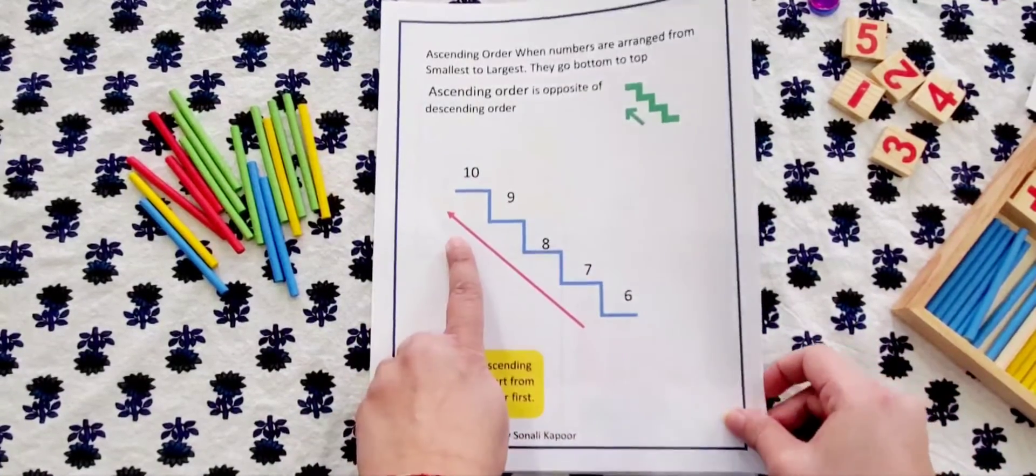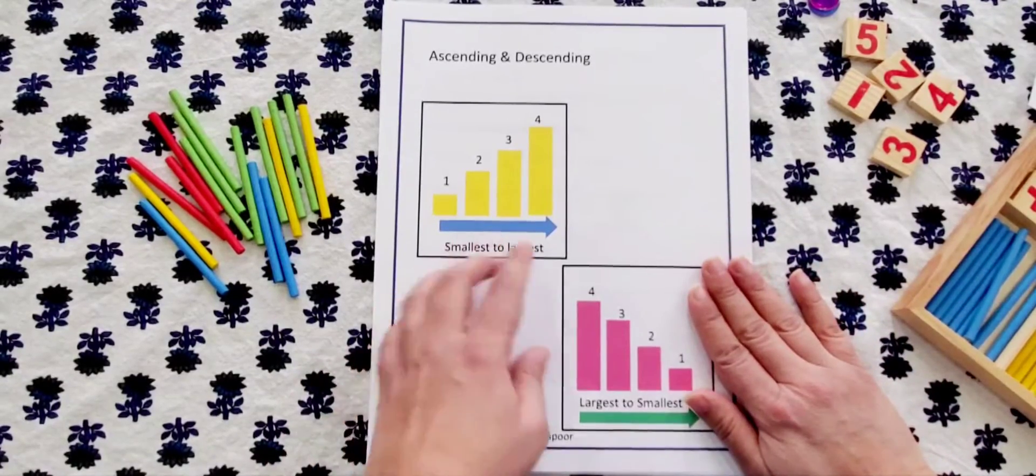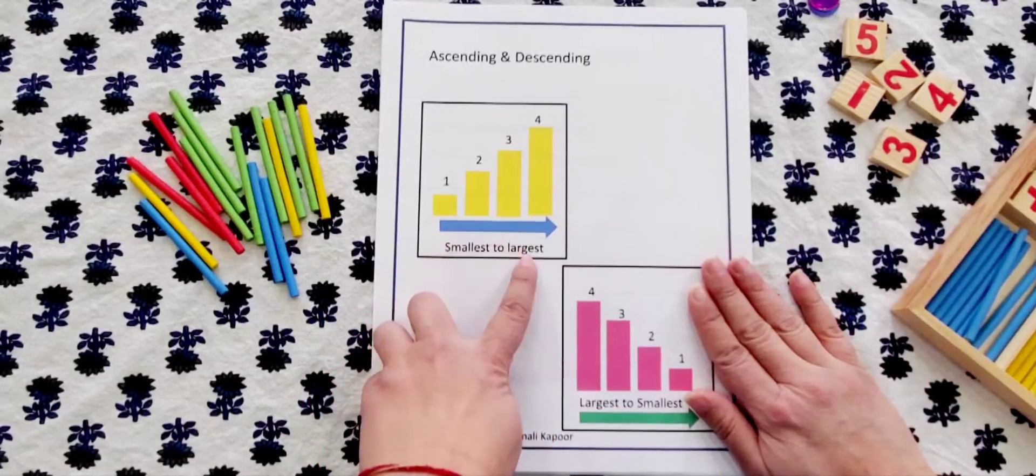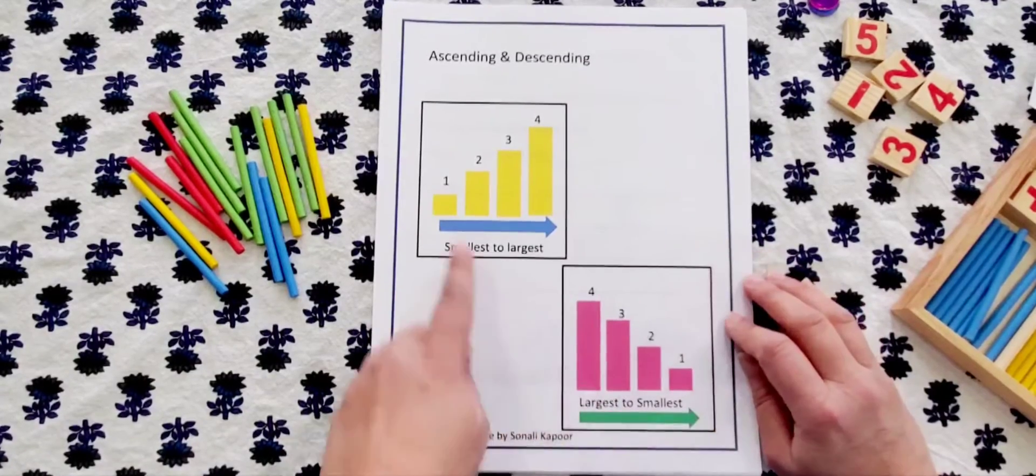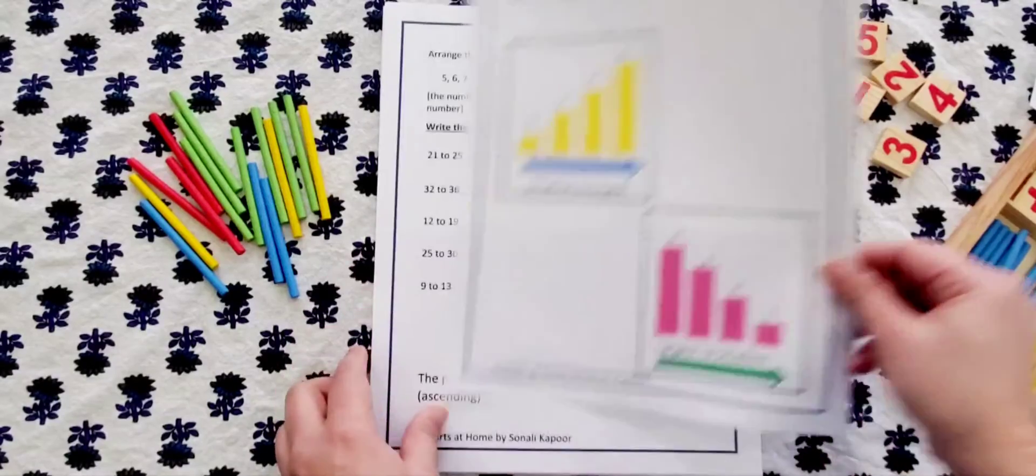And the arrow is going towards up. Another example of ascending and descending which is smallest to largest and largest to smallest, so 1, 2, 3, 4 with the pictorial images for kids to understand.